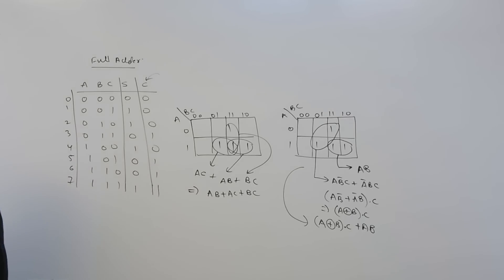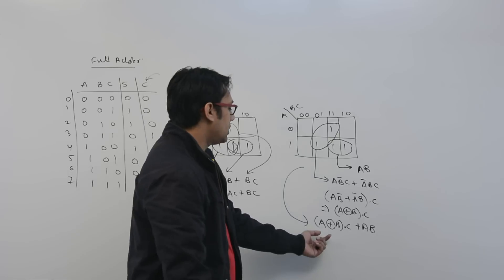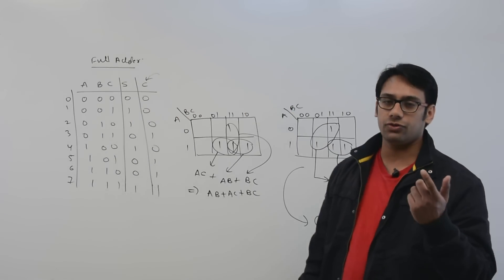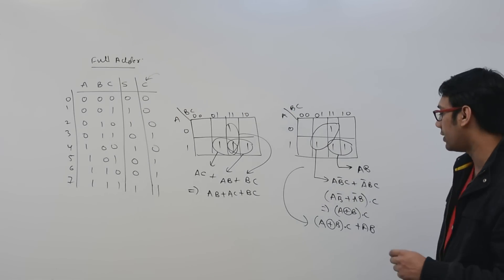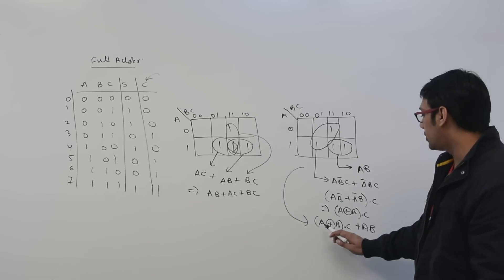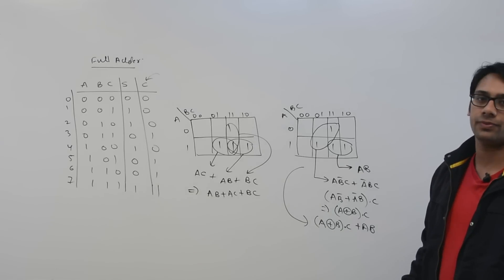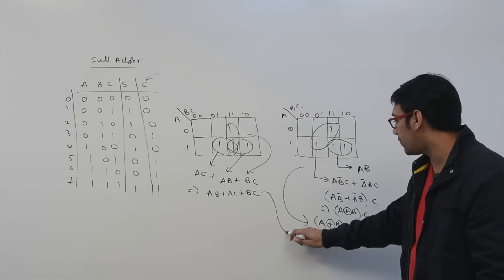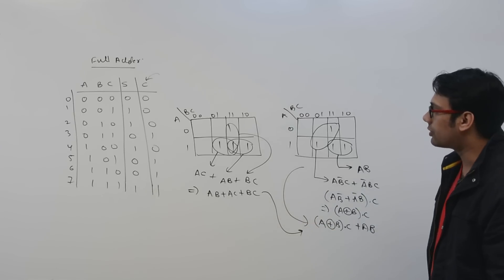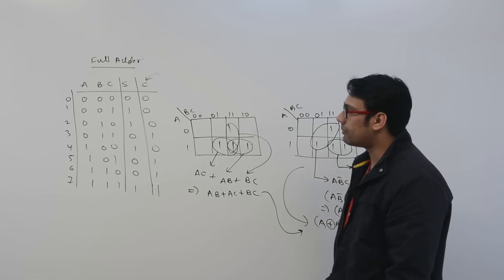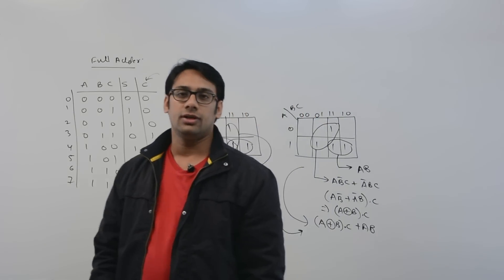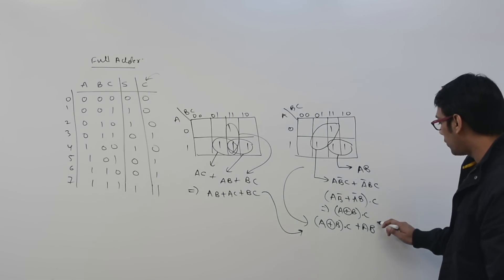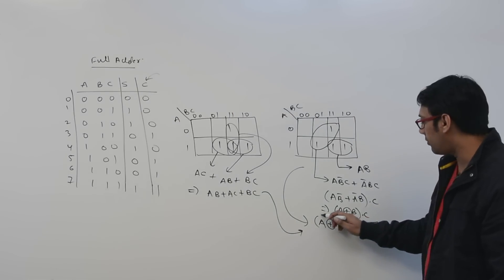Why do I say a XOR b? Because I am implementing a full adder using a half adder. In a half adder, the sum is a XOR b. So I changed this expression to use a XOR b because we wanted to implement this full adder as a half adder — that is also valid.